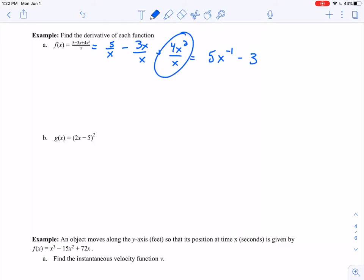And 4x squared over x, I know that my x's will cancel, so I'll be left with plus 4x. So here is my original function. I have not yet taken the derivative, but I've made it so that it's easier for me to take the derivative.